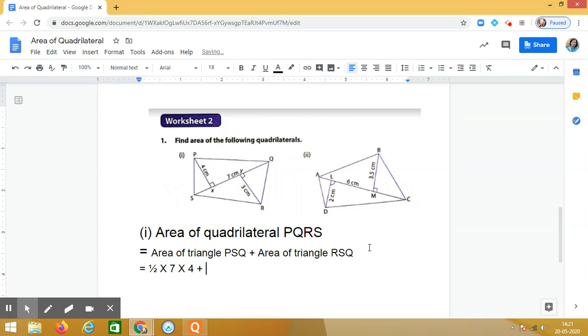Plus area of triangle RSQ. Yes, it is half, half into SQ, SQ is 7, into RY, that is 3.